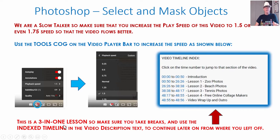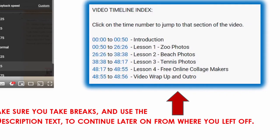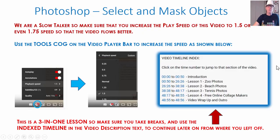This is kind of a three-in-one lesson. We're going to show you three ways of doing Select and Mask and then how you can place objects into other images. It's a three-in-one lesson so take breaks — maybe do the Hong Kong lady exercise first as part one, and then for part two and three where we're doing the 80s guys using different methods, come back and do that later. There'll be an index timeline in the video description — click on the timestamp to jump straight to part two.